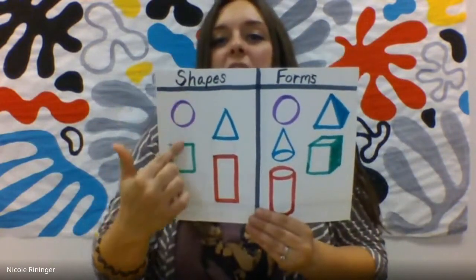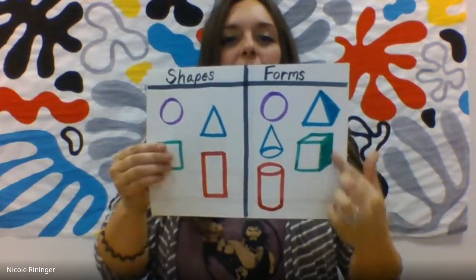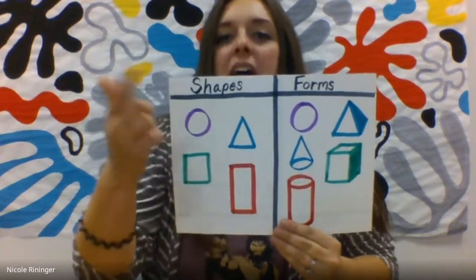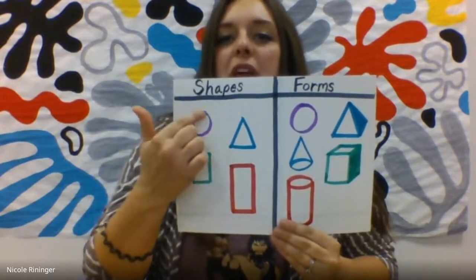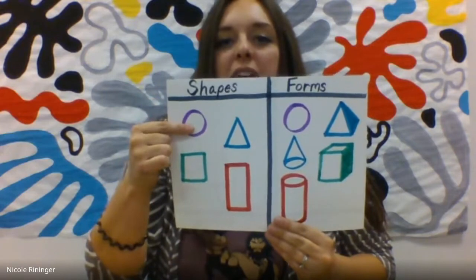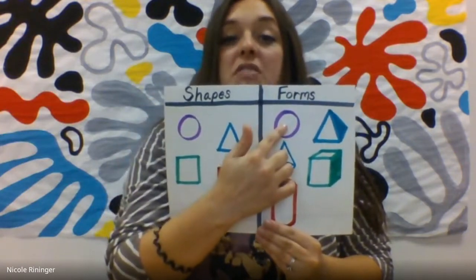In this column I have some flat shapes and in this column I have forms. Now I want to show you what makes them different. A shape is just a line that goes around until it connects. So here we have a flat shape of a circle. Here we are going to turn this into a sphere by shading it in so that it looks like a ball.